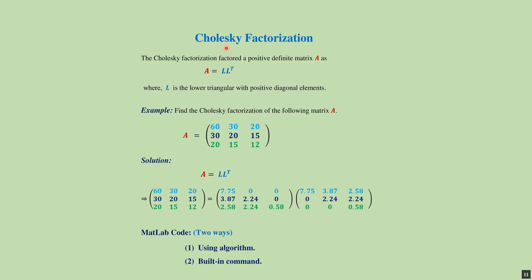In this video we will learn the MATLAB code for Cholesky factorization. The Cholesky factorization factors a positive definite matrix A as A equals L times L transpose, where L is the lower triangular matrix with positive diagonal elements. For example, if we find the Cholesky factorization of this matrix A by hand, it becomes like this, where this one is the lower triangular matrix.